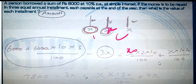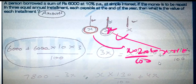So here we will put x into 2 into 10 divided by 100, and x into 1 into 10 divided by 100.